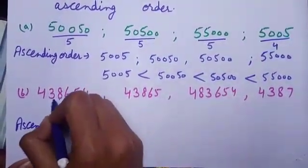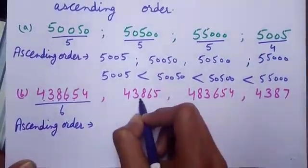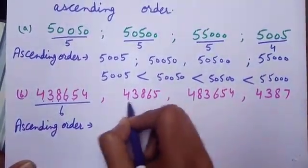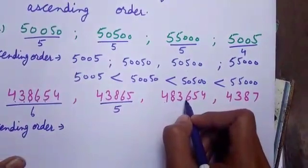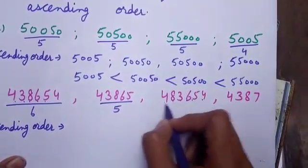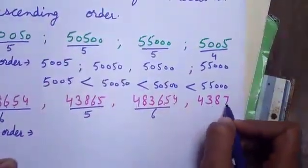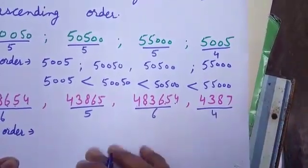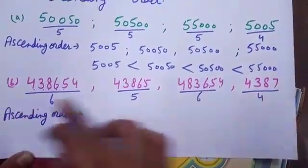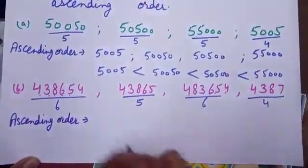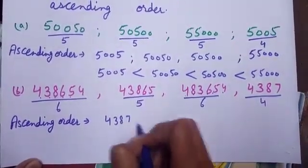The first numeral has 6 digits, the second numeral has 5 digits, the third numeral has 6 digits, and the fourth numeral has 4 digits. Obviously, the 4-digit numeral is the smallest among them. Firstly, I will write the 4-digit numeral, then the 5-digit numeral.